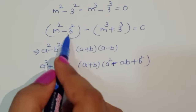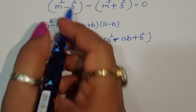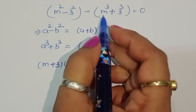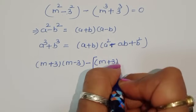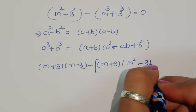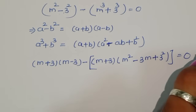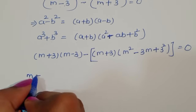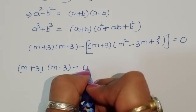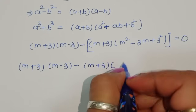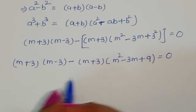Applying the formulas: m squared minus 3 squared becomes (m plus 3)(m minus 3). Then minus m cubed plus 3 cubed becomes minus (m plus 3)(m squared minus 3m plus 3 squared) equal to zero. Now we have (m plus 3)(m minus 3) minus (m plus 3)(m squared minus 3m plus 9) equals zero.